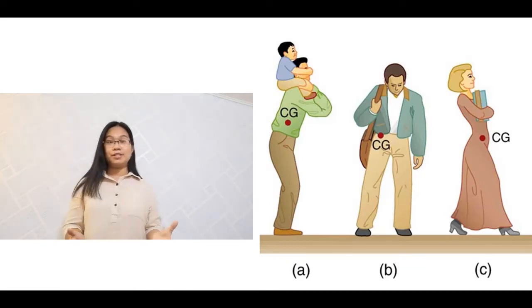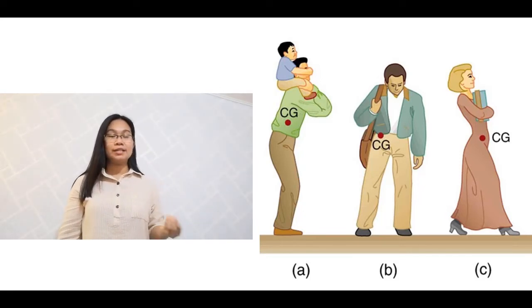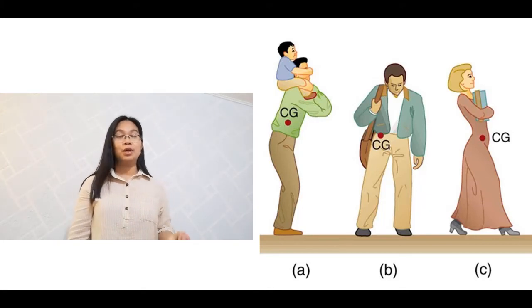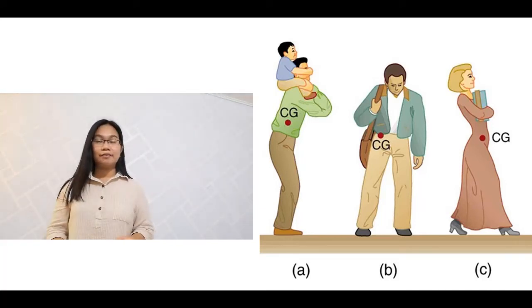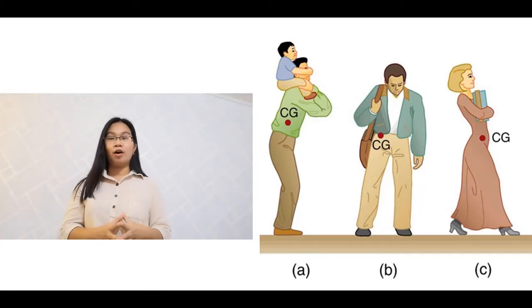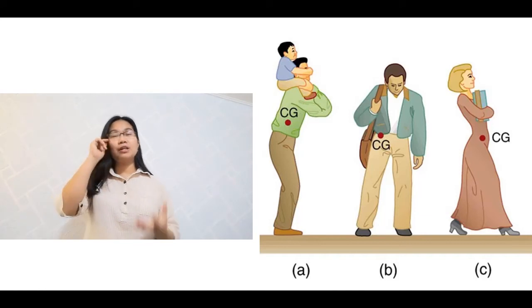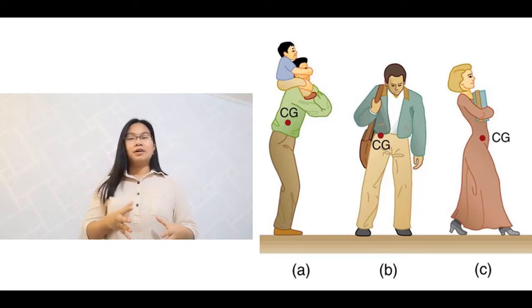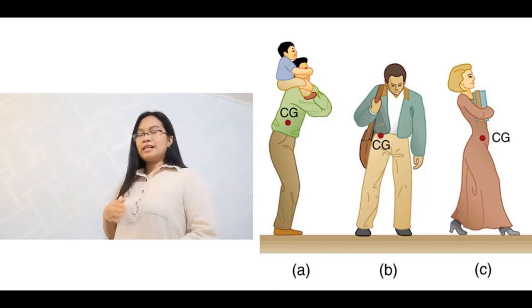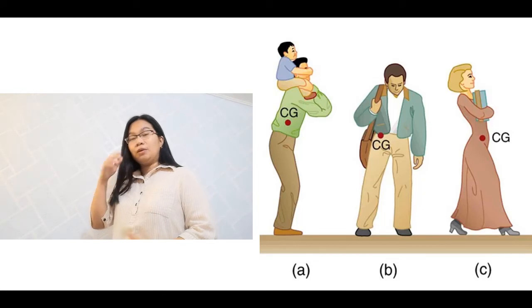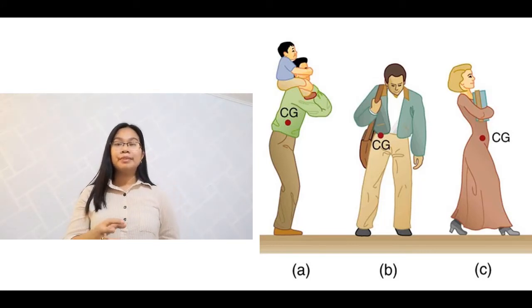Here are illustrations about the center of gravity — it can shift. If a man carries a boy, the center of gravity shifts due to the additional load. Similarly in illustrations B and C, the center of gravity shifts because of added load. Pregnant women experience back pain because the added weight of the baby shifts the center of gravity forward, which could cause toppling. The back muscles must counteract that rotation to keep the woman balanced.